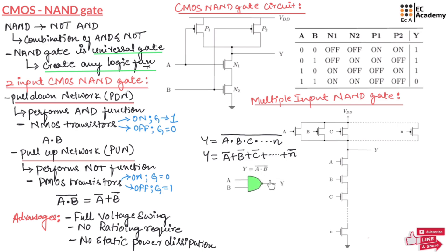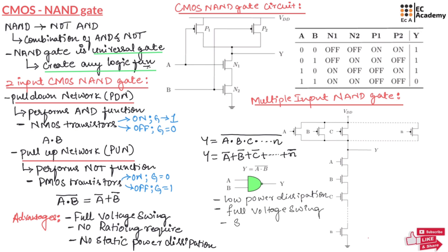So this is the representation of NAND gate with two inputs A and B and output Y. The operation can be written as Y is equal to A dot B whole bar. Finally, we can say the CMOS NAND gate is a fundamental building block of digital logic design. It offers low power dissipation, full voltage swing, and scalability. Due to these advantages, NAND gate is a favorite in efficient circuit design in VLSI. Hope you have understood the topic.